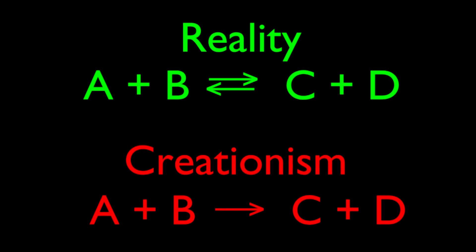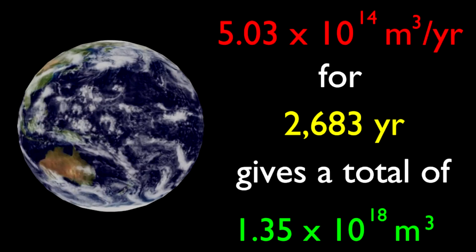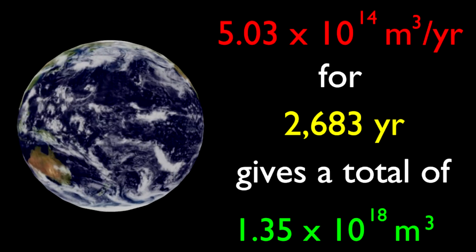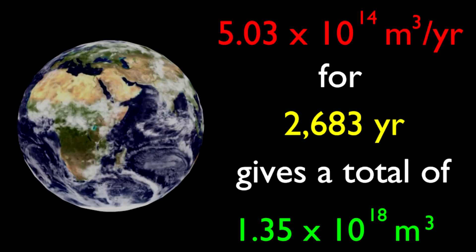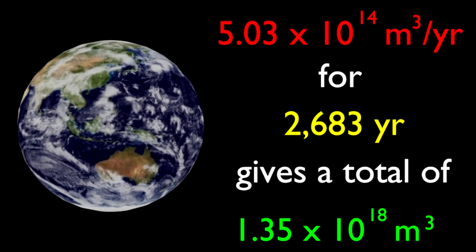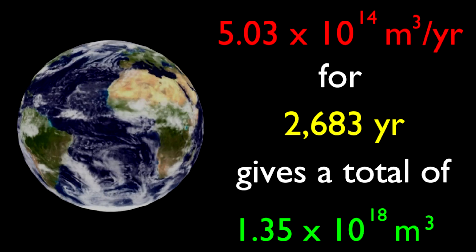Of course it's easy to illustrate why this is stupid. For example, the ocean has 1.35 times 10 to the 18 cubic meters of water today. Also, the rate at which water enters the ocean by precipitation and runoff from rivers is 5.03 times 10 to the 14 cubic meters per year.